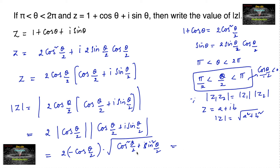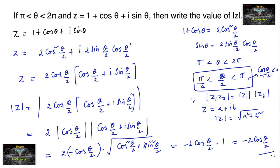So we can write this as minus 2 cos(θ/2) times the square root of 1, which equals 1. Therefore the answer is minus 2 cos(θ/2). So the modulus of 1 plus cos θ plus i sin θ is minus 2 cos(θ/2).